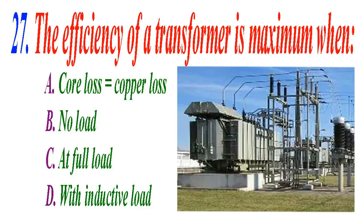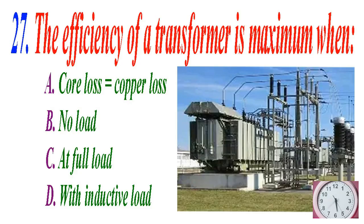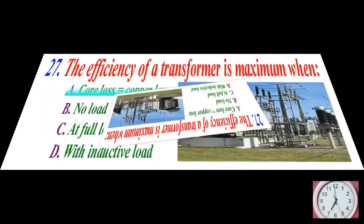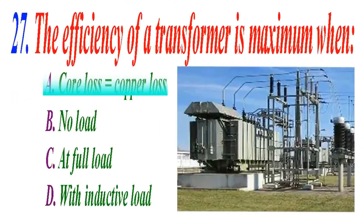The efficiency of a transformer is maximum when: A core loss is equal to copper loss, B no load, C at full load, D with inductive load. The correct answer is A, core loss is equal to copper loss.